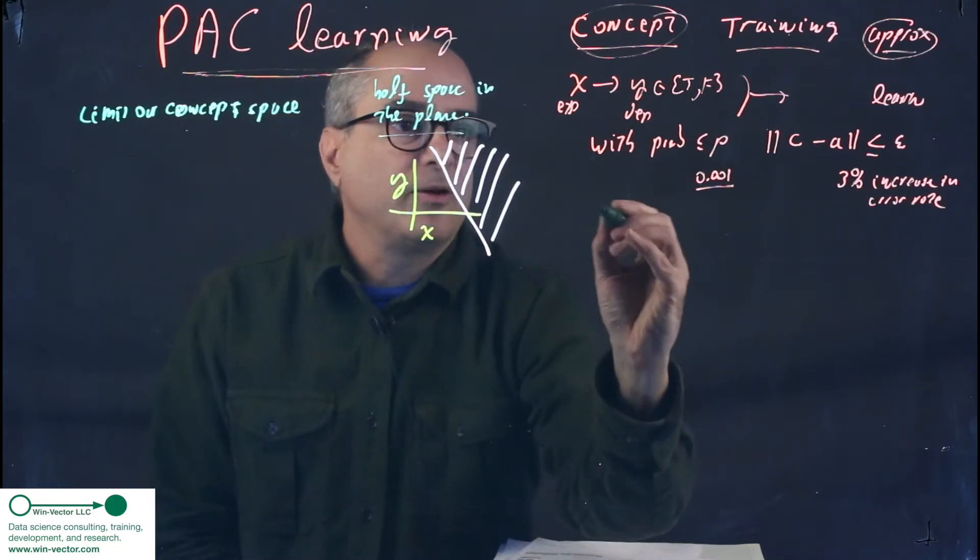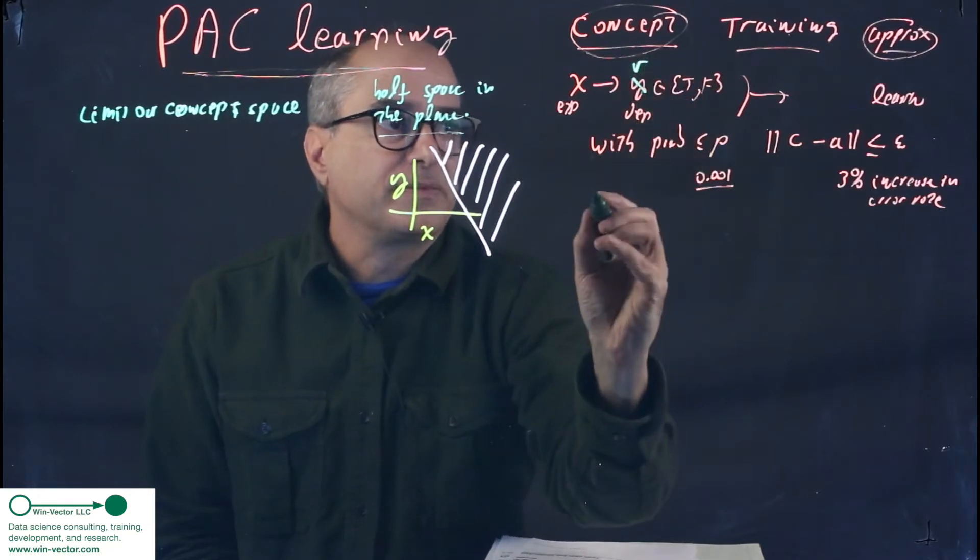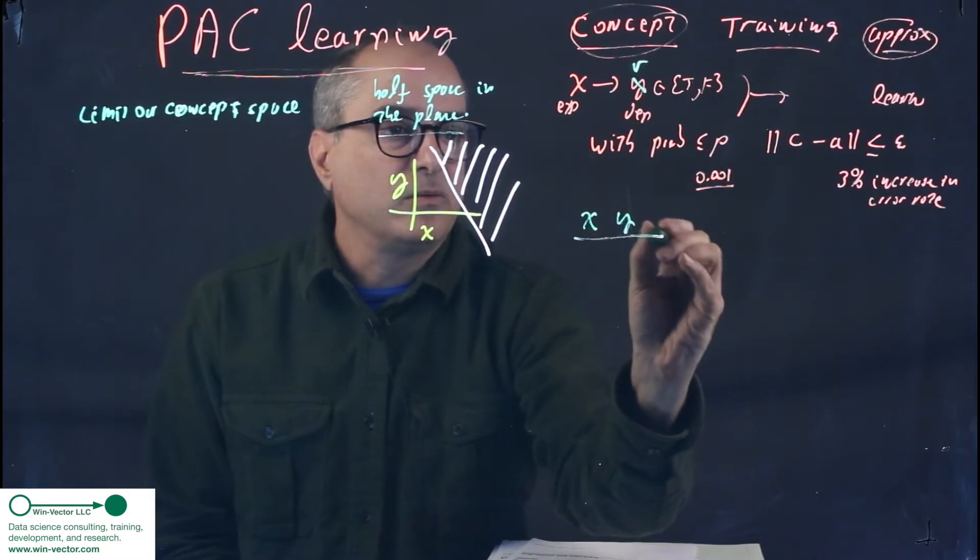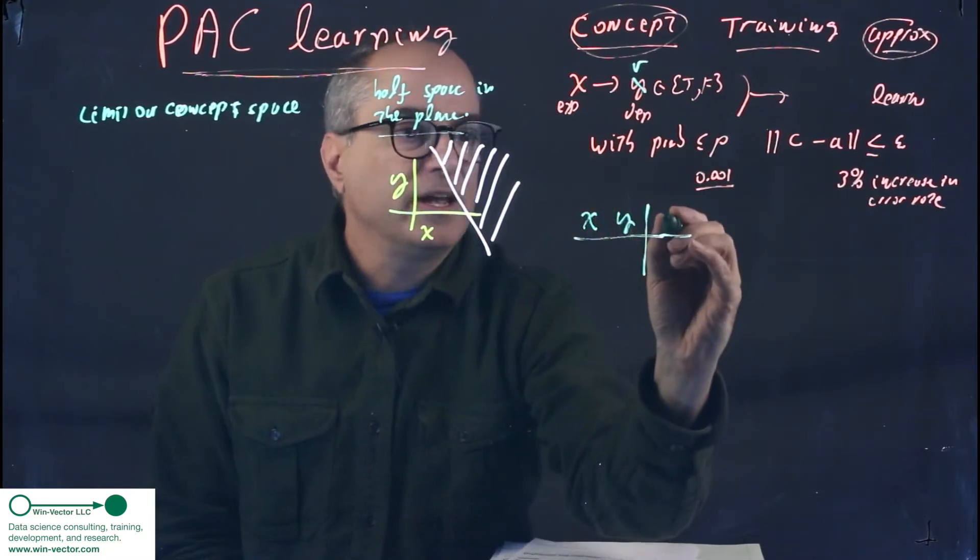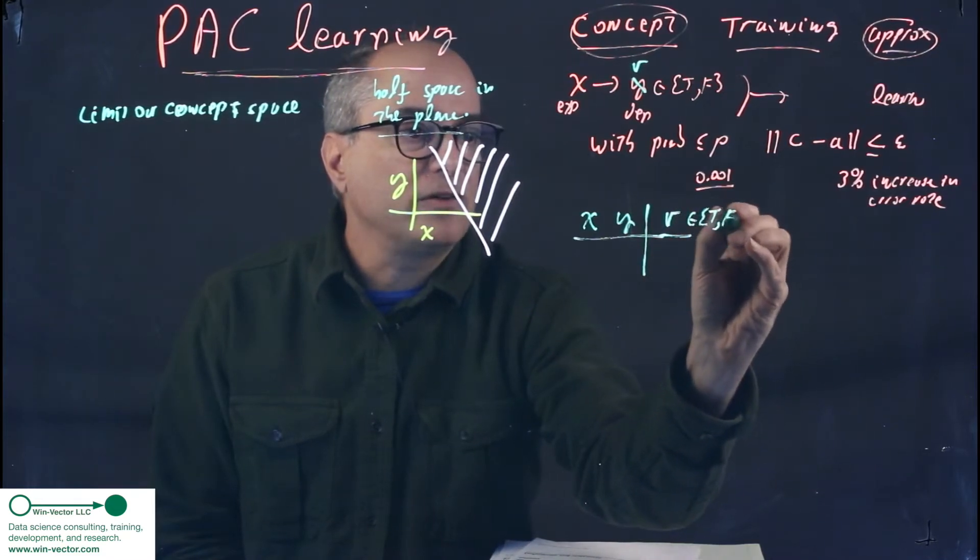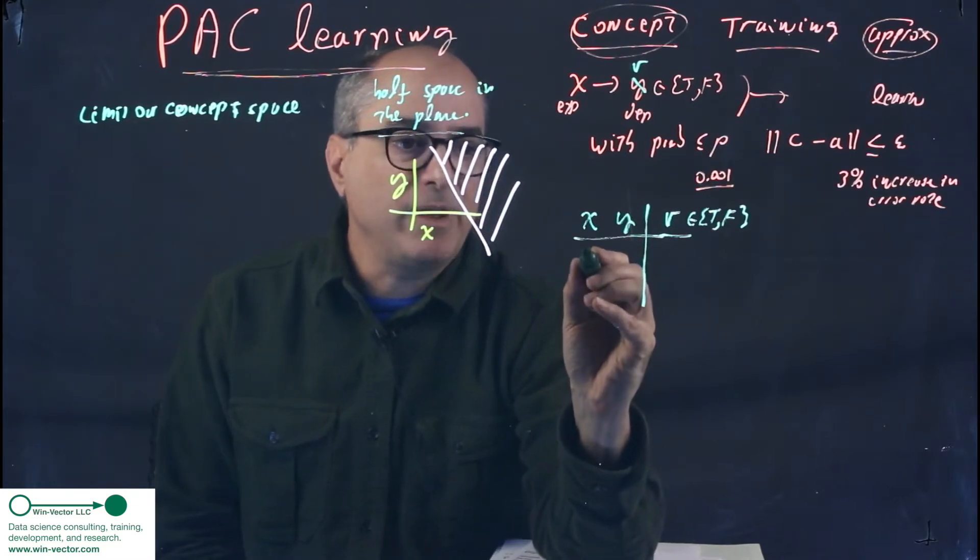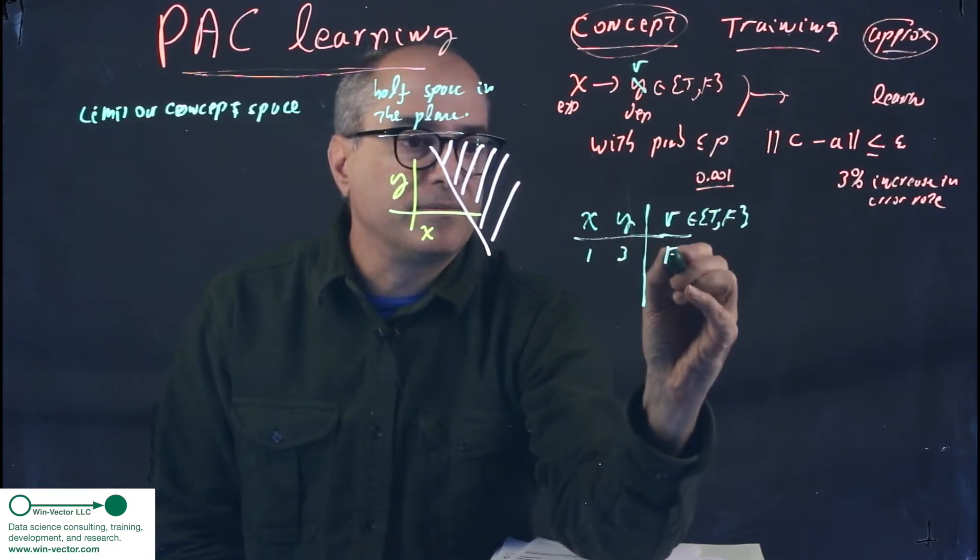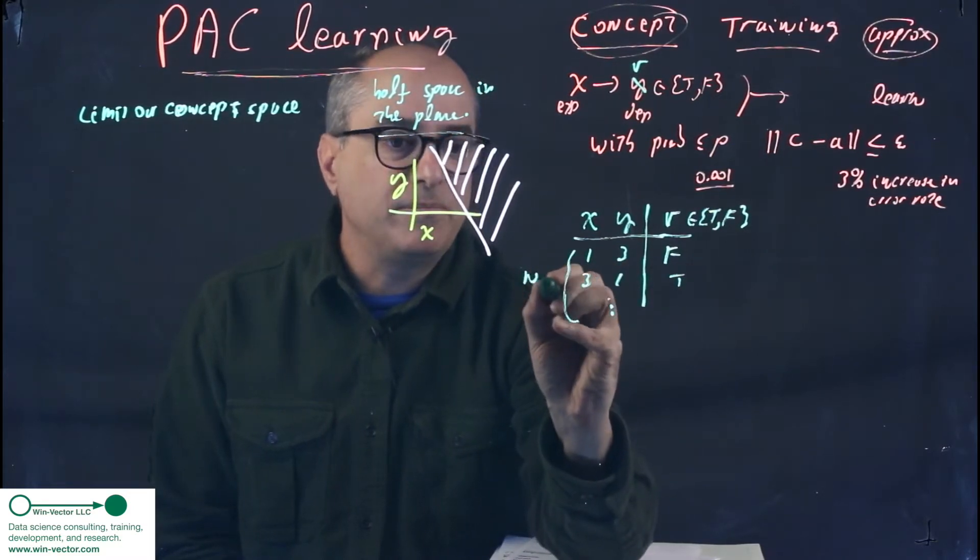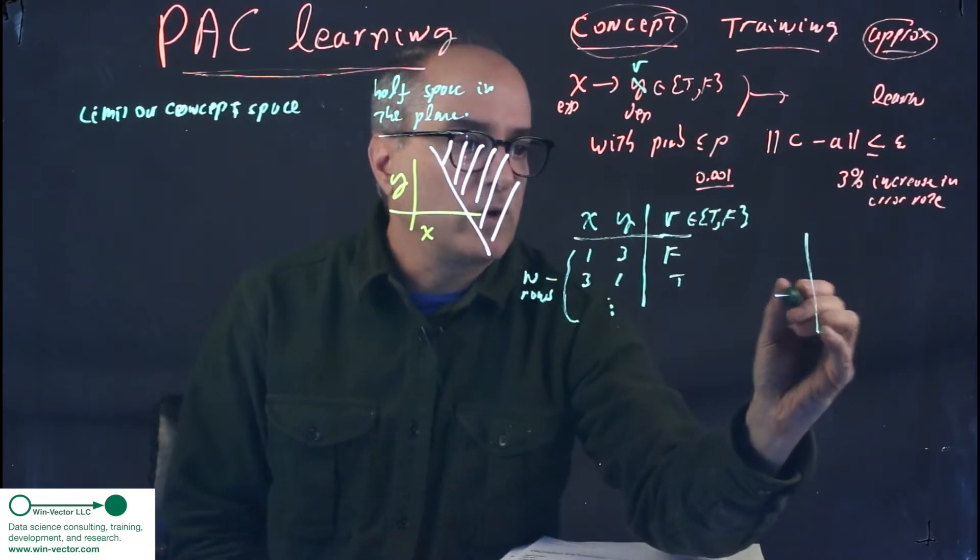So under that rubric, training data, let's not call this y, let's call this the value. So we have x, y which are our explanatory variables and we have v, remember true, false that we're trying to predict given knowledge of x and y. This data can come in in tabular format. And there might be a lot of it, let n be the number of rows.